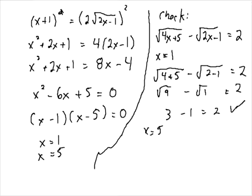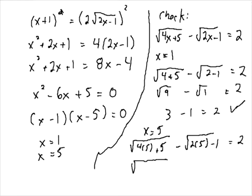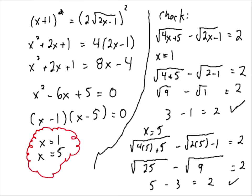Now we've got to check x equals 5. There's nothing to say that both of these will or won't work — that's why we always have to check. So we're going to get square root of 4 times 5 plus 5 minus square root of 2 times 5 minus 1. Does that equal 2? 4 times 5 is 20, plus 5 is 25 — root of 25 — minus square root of 10 minus 1, which is 9. Does 5 minus 3 equal 2? It definitely does. So both solutions work in this radical equation. There may be extraneous roots — there's no guarantee that there will be — that's why we always have to check.